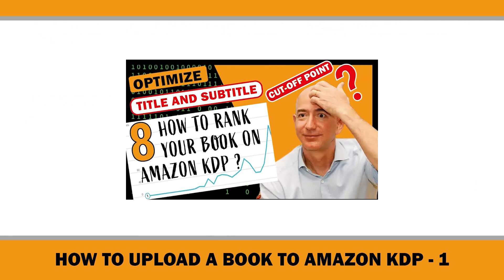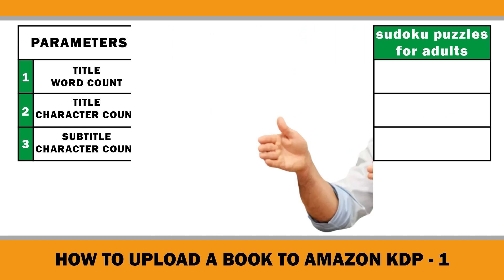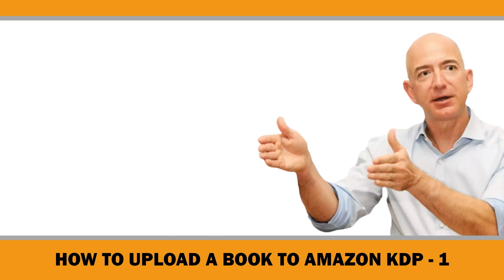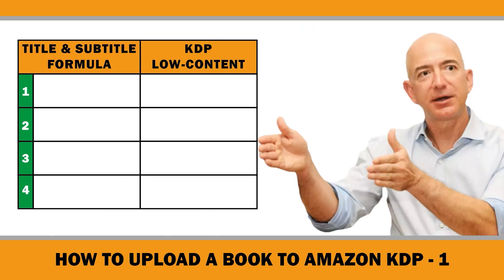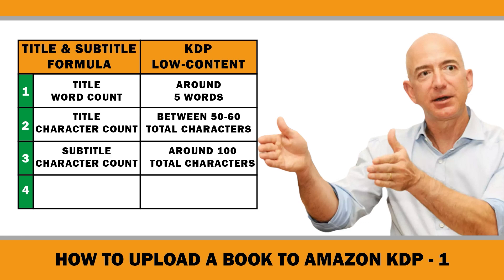Include only the most important keywords to capture the attention of your intended customer. In one of my videos, I conducted an experiment to find the optimal character length for titles and subtitles. I analyzed 141 books across three different niches — I will include the video link in the description so you can watch it and learn how to perform a similar test for your niche. Based on my experiment, here is an optimized formula for Amazon KDP titles and subtitles.